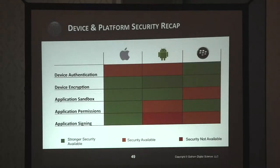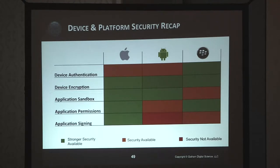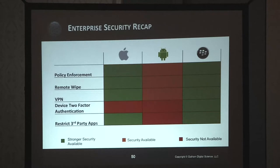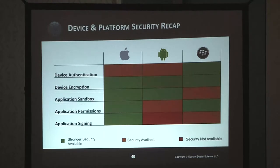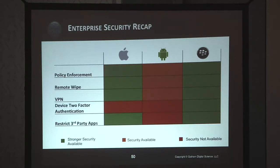To recap, I've put together a diagram that lays out where security is stronger in certain operating systems. iOS is sort of leading, but Android and BlackBerry are not too far behind. The green area represents the strongest security, red being security not available at all. The comparison covers: device authentication, device encryption, application sandbox, application permissions, application signing, policy enforcement, remote wipe, VPN, and device two-factor authentication. Policy enforcement is not something you can do with Android. Device two-factor is still missing from iOS and Android. Restricting third-party apps is not possible with Android.